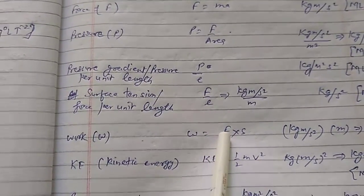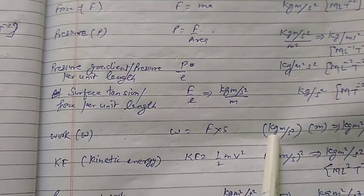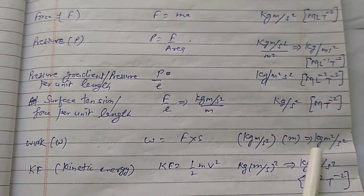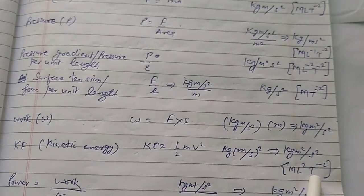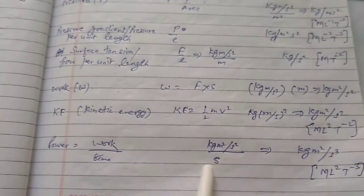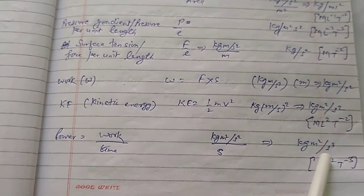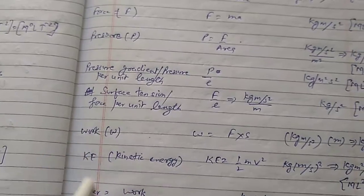For example, work is force into displacement. Force unit is kilogram·meter per second square, displacement unit is meter, so work unit is kg·m²/s². The dimension of work comes out to be ML²T⁻². Kinetic energy has the same dimension. Power is work upon time — unit is kg·m²/s³ — so dimension is ML²T⁻³.